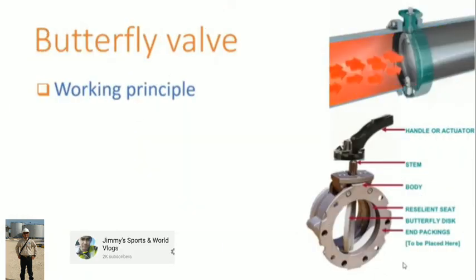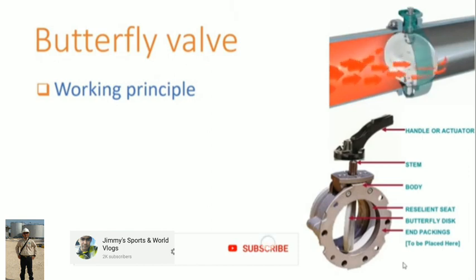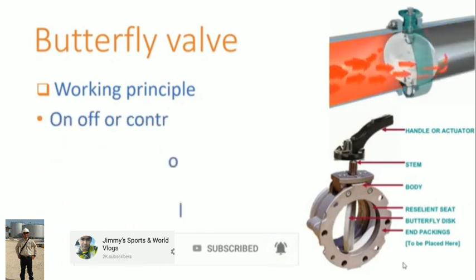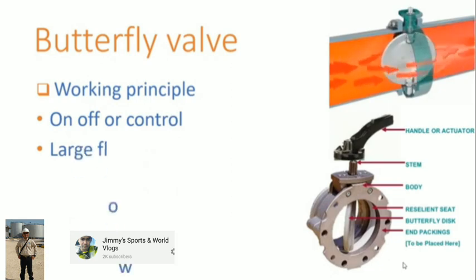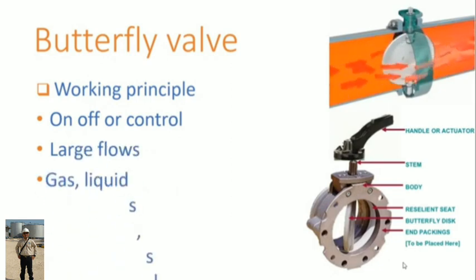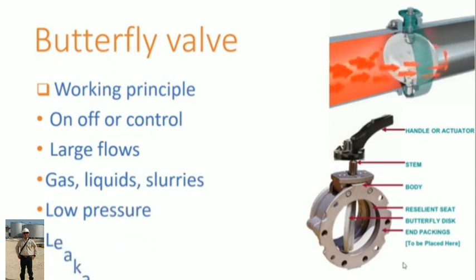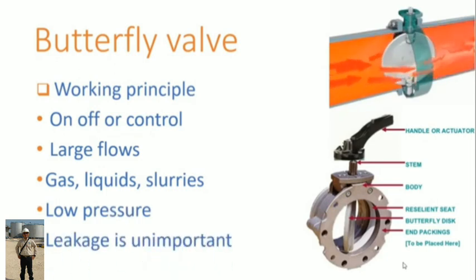Working principle of butterfly valve. This valve has a rotating disc in the pipe section body where a stem passes through. The disc is supported by both ends of the body. This can be used for both on-off or control applications while handling large flow of gases or liquids, including slurries. Butterfly valve uses for low pressure applications where leakage is unimportant.